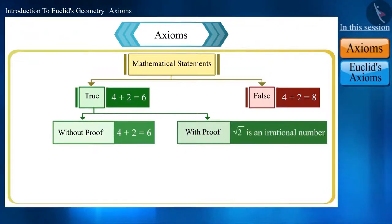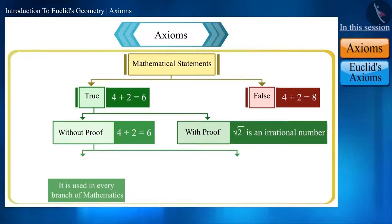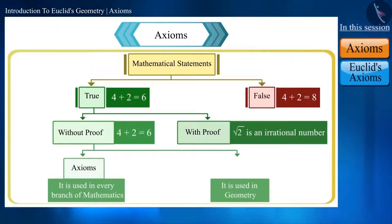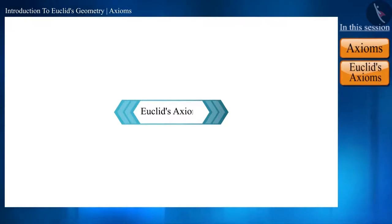And it also has two classes: first which is used everywhere or generally in every branch of mathematics - it is called axioms. And the second which is particularly related to geometry - that is called postulates. We will discuss the postulates in detail in an upcoming video. Here we will look at some of the axioms given by Euclid.